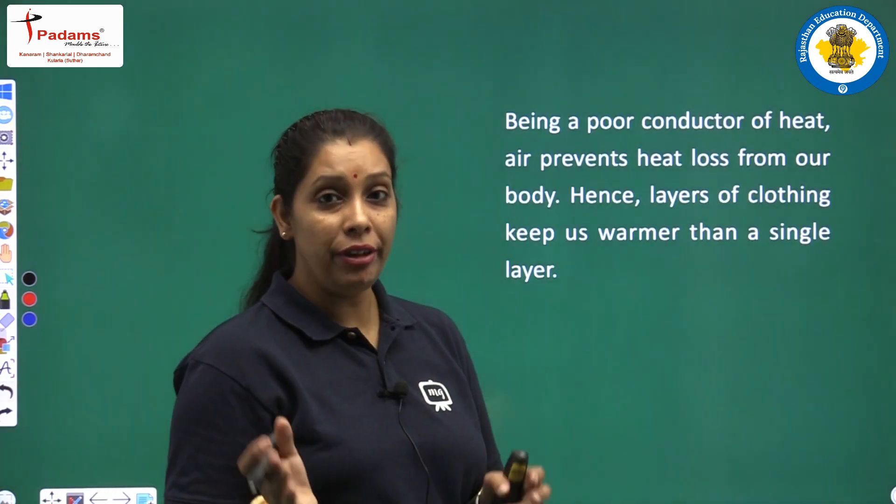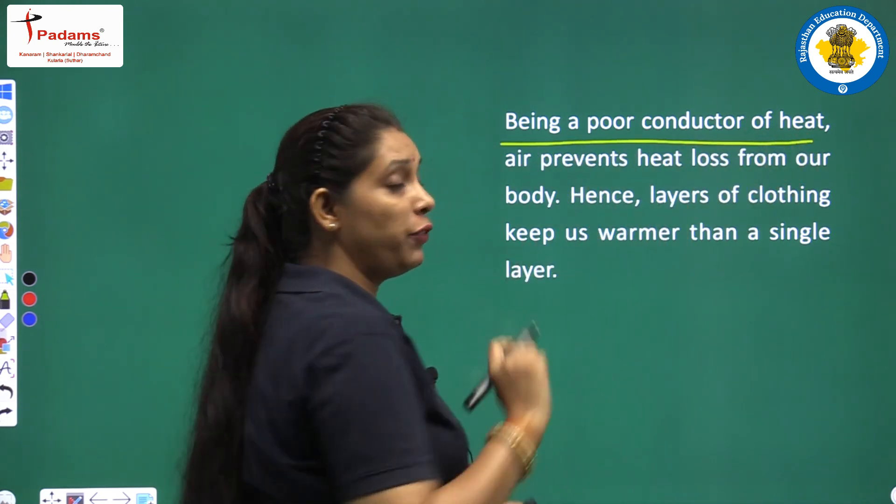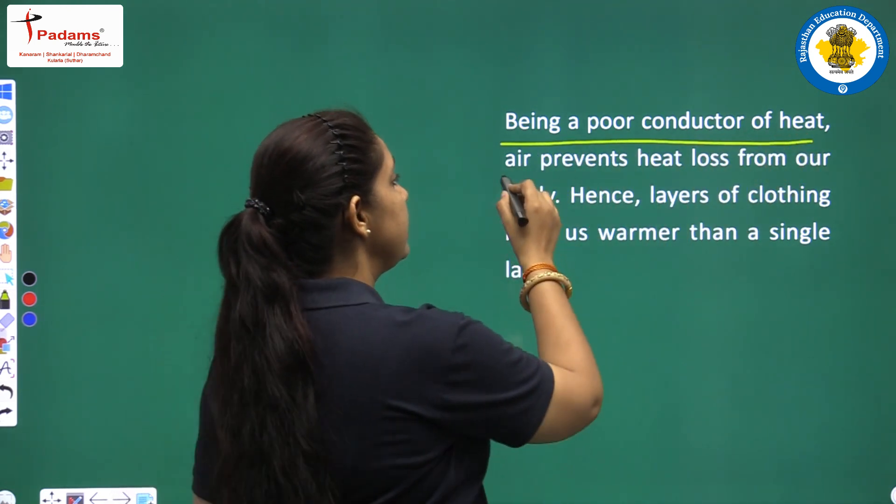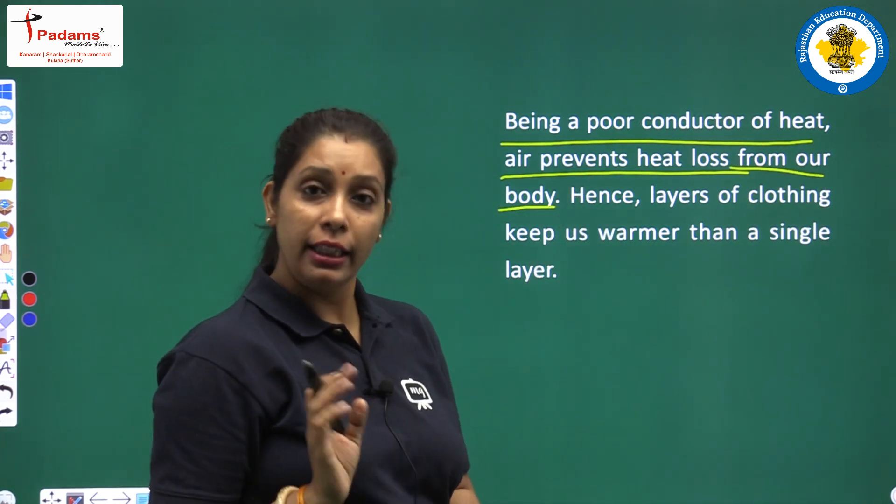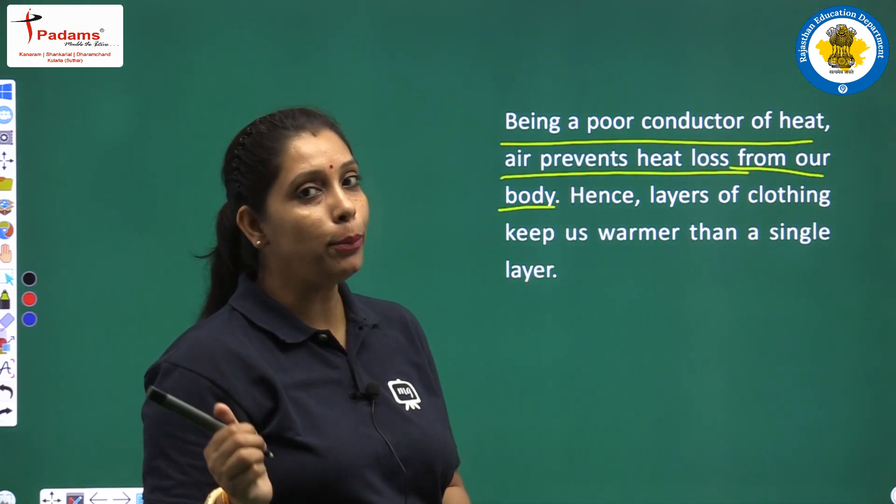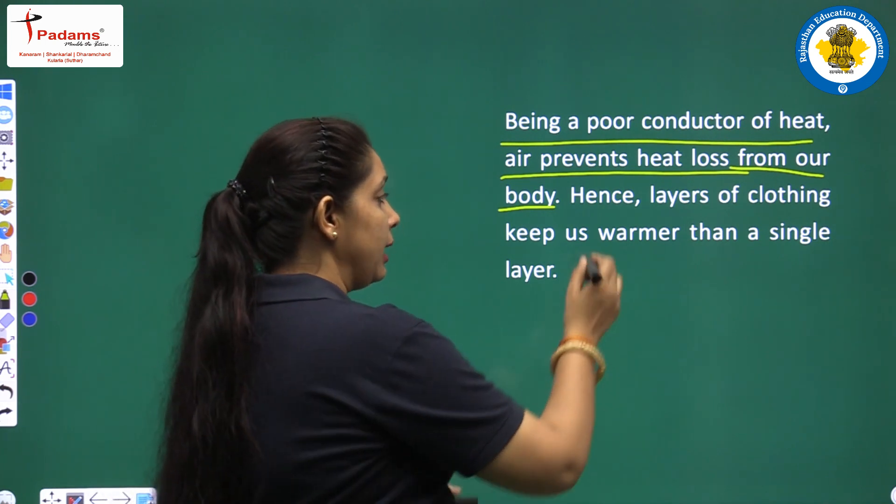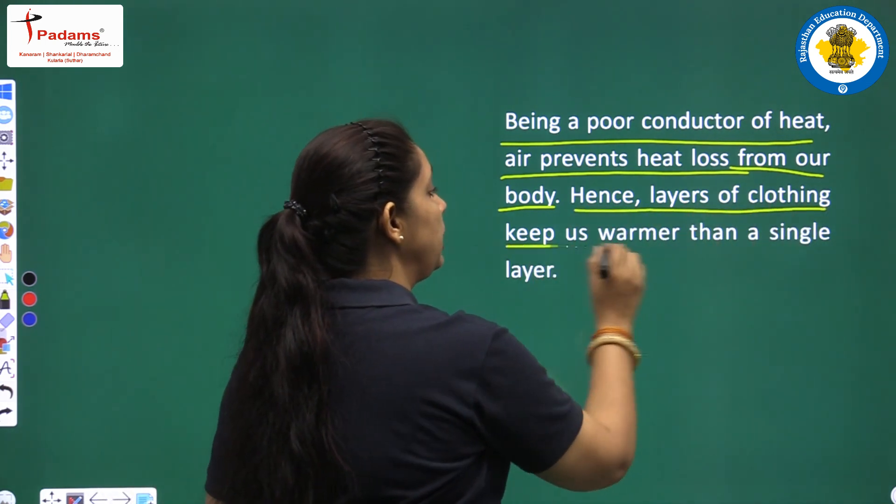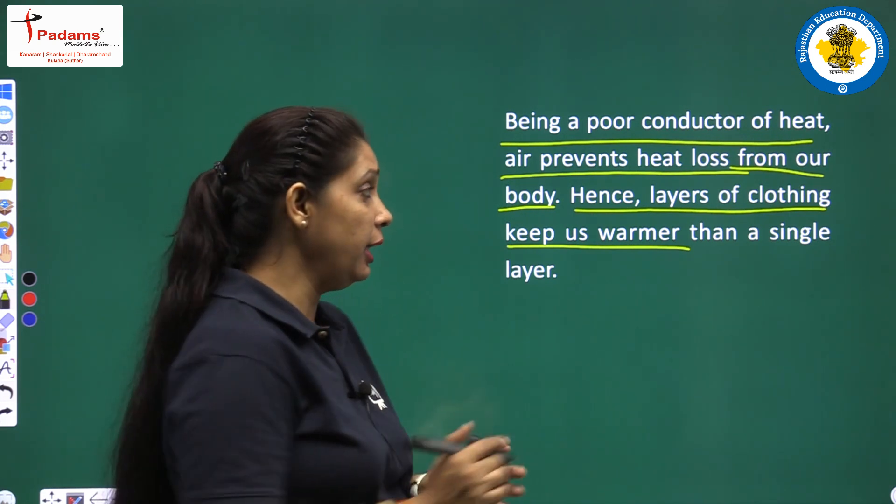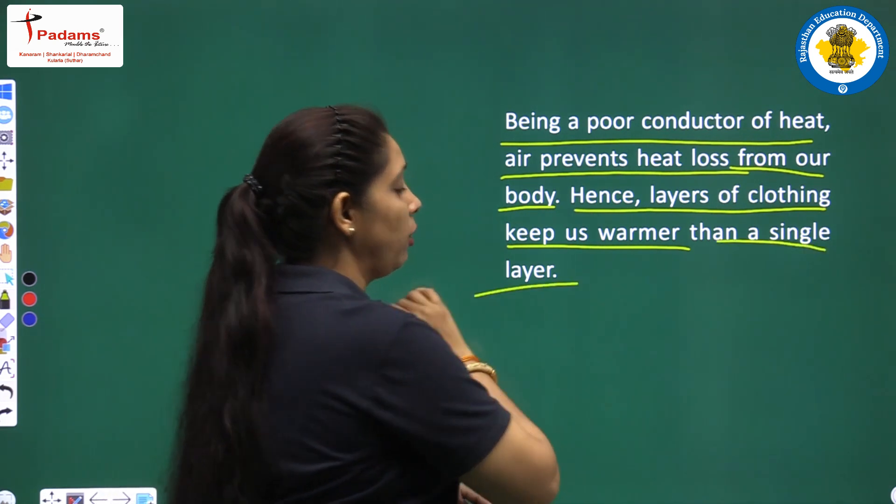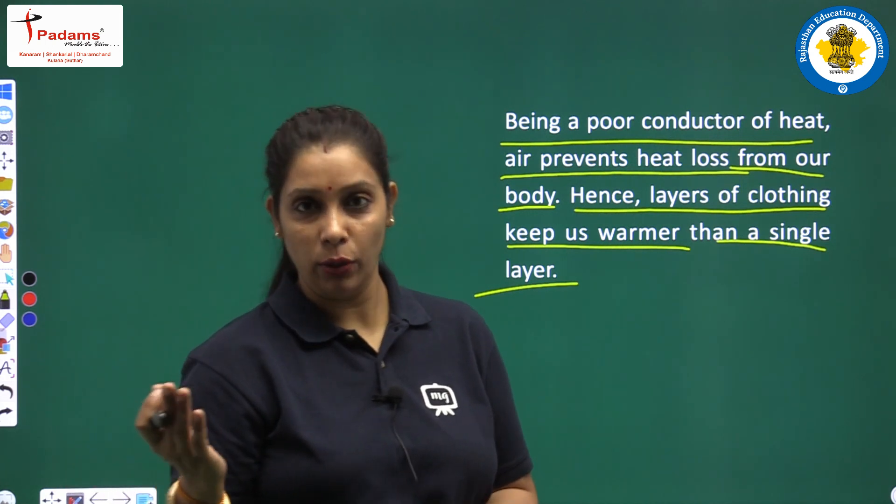And we know air is a poor conductor of heat. So we will write: being a poor conductor of heat, air prevents heat loss from our body. Hence, layers of clothing keeps us warmer than a thick layer of clothing or than a single layer.